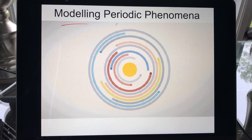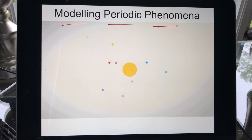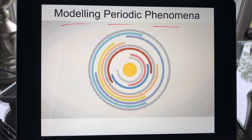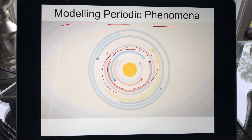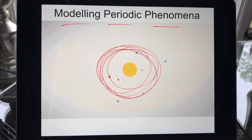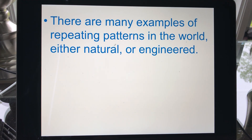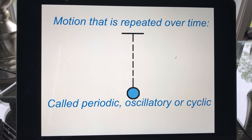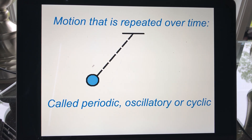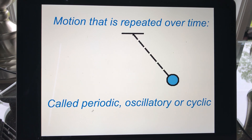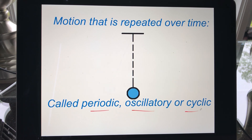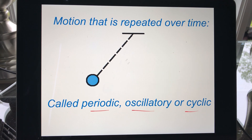Today we're going to start with modeling periodic phenomena. The best example is imagining Earth spinning around the Sun, repeating that motion over and over again. There are many examples of repeating patterns in the world, either naturally occurring or engineered. Motion that is repeated over time is called periodic, oscillatory, or cyclic — and that's what we're talking about.